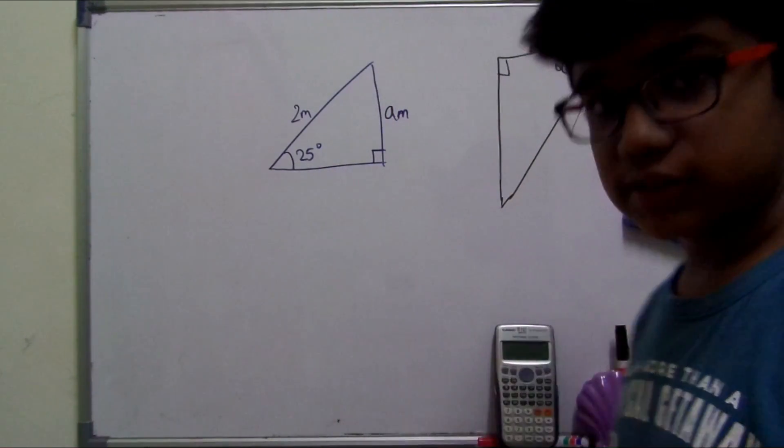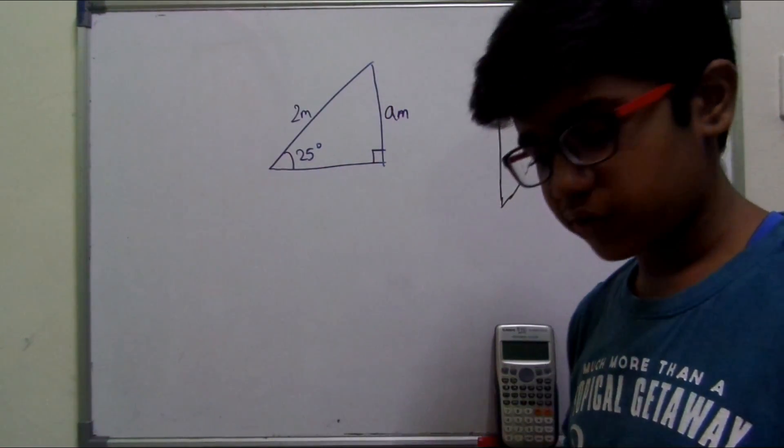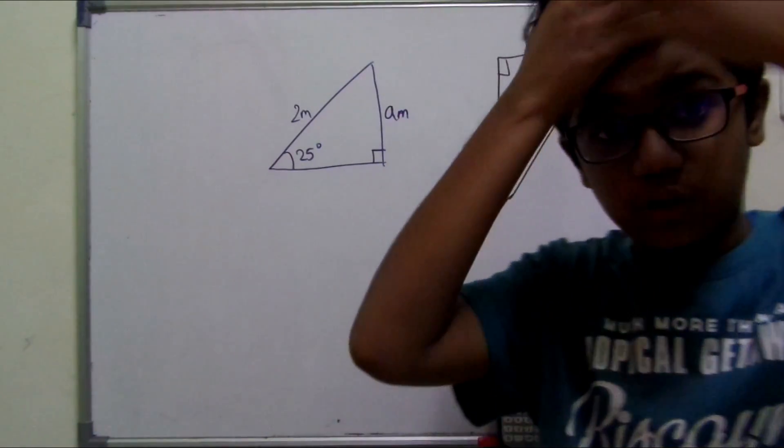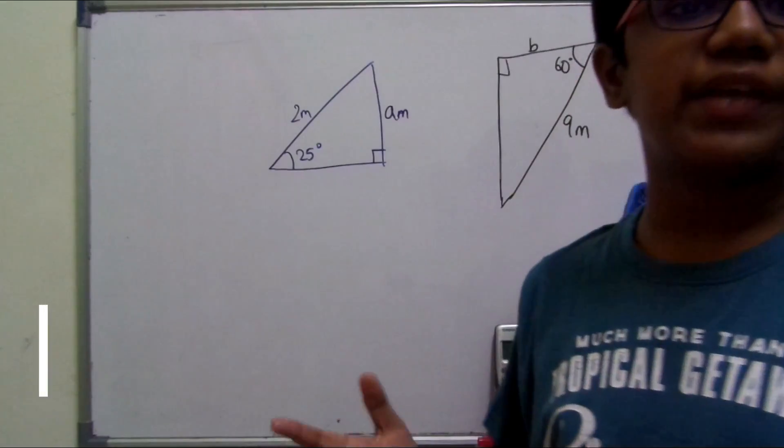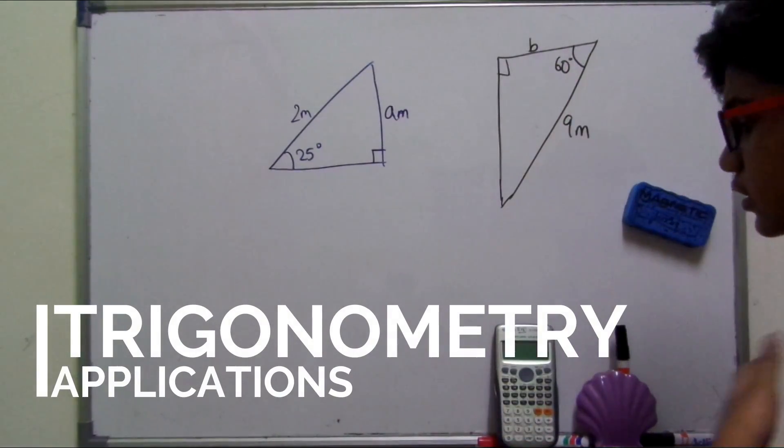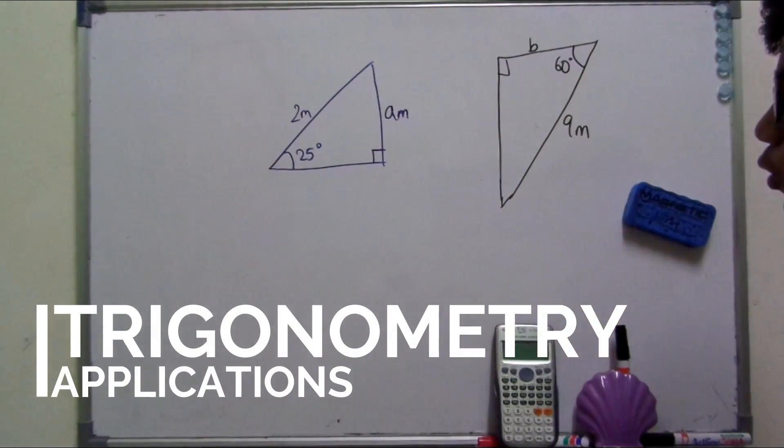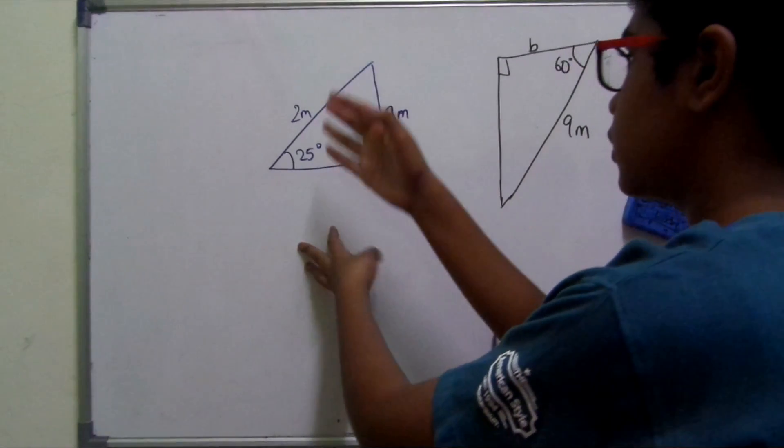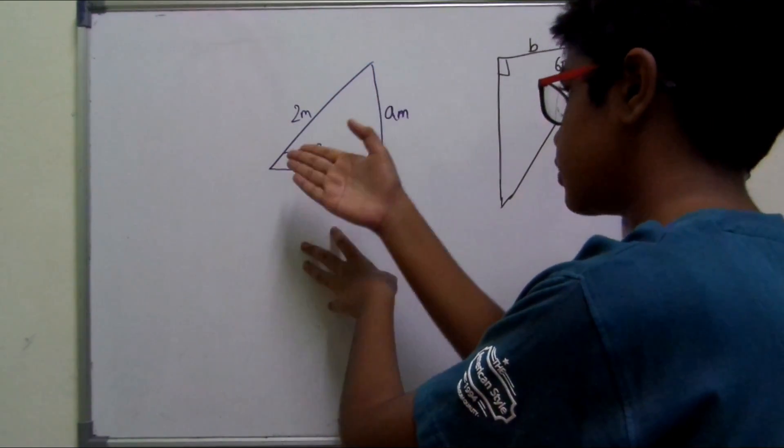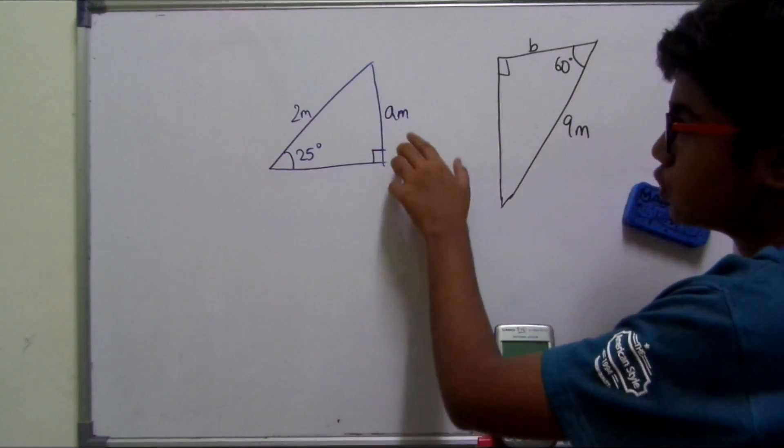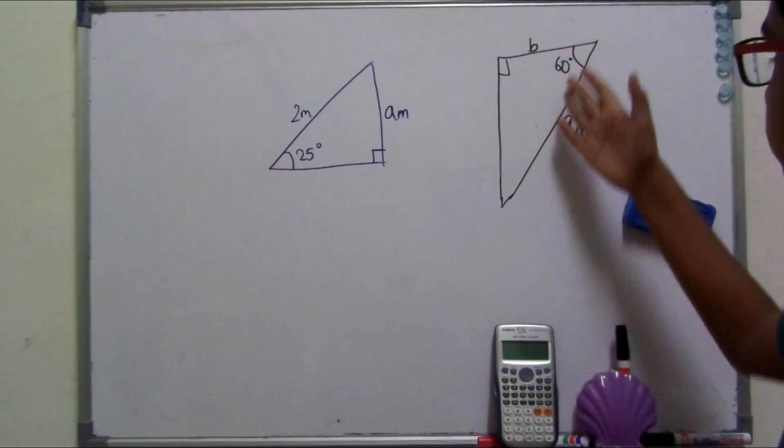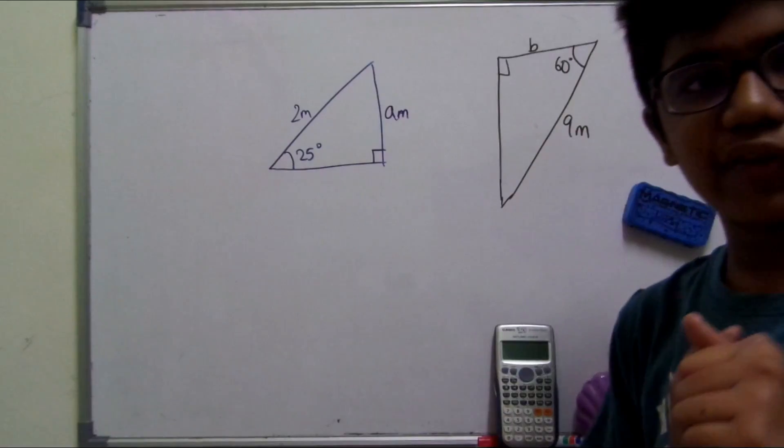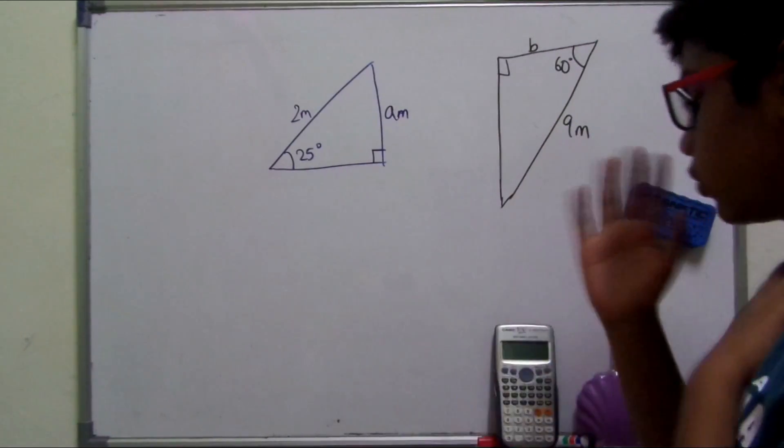So guys, this is the second part of the video. The first video talked about the basics of trigonometry, and this second part will apply the basics of trigonometry in these sort of problems where you are given one angle, one measurement of one side, and you are asked to find out the length of the other side.